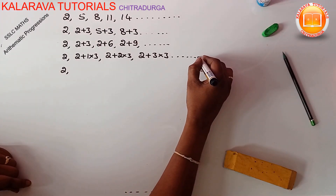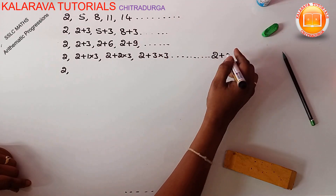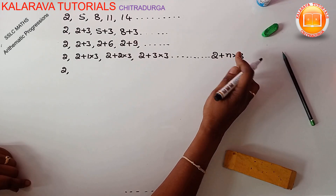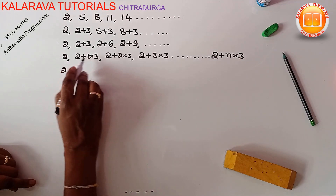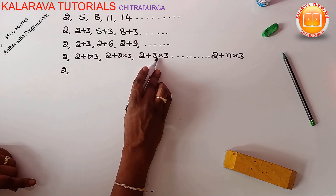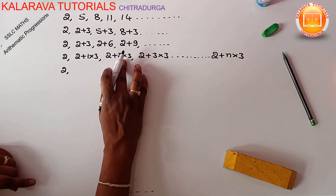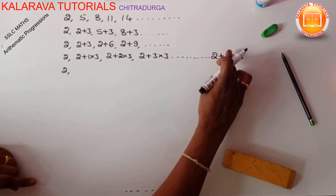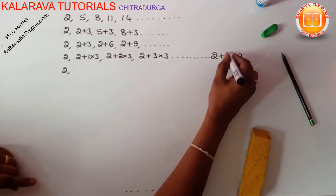To get any term, we add a multiple of 3 to the first term. For the nth term, we might think we add n times 3, but observe: for the second term we add 1 time, for the third term 2 times, for the fourth term 3 times — that is always 1 less. So for the nth term we add n minus 1 times 3.